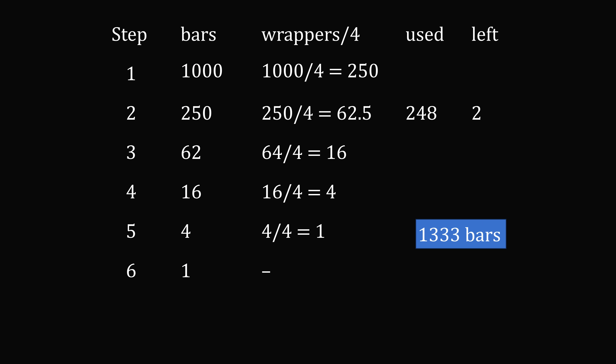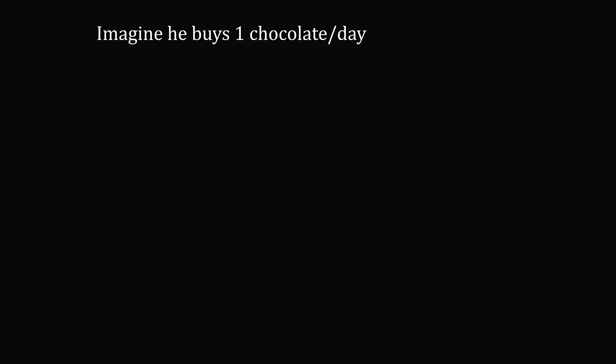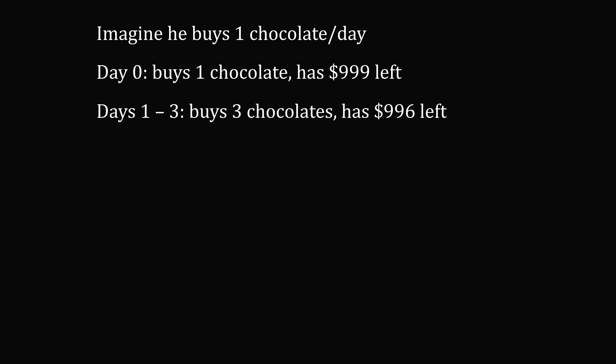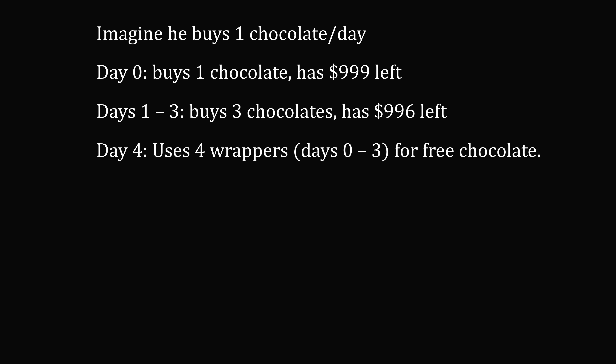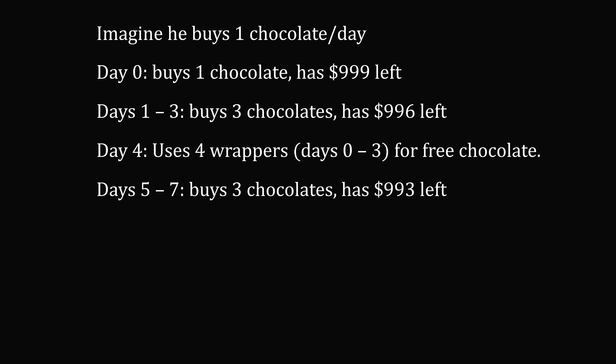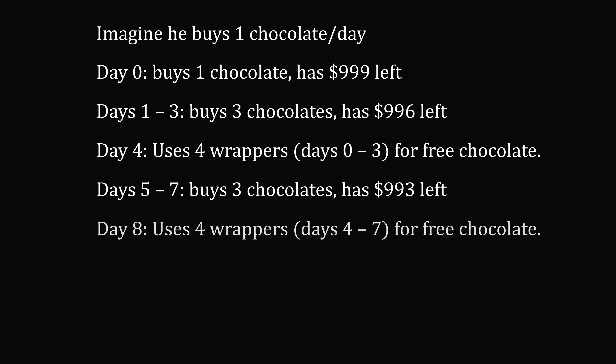Now this is the long way to solve the problem. Here's a clever trick. Imagine Charlie buys 1 chocolate bar per day. On day 0, he buys 1 chocolate and has $999 left. Now think about buying 1 chocolate bar on each of the next 3 days — he'll get 3 chocolates and have $996 left. At this point there are 4 chocolate wrappers, so on day 4 he can use those 4 wrappers to get 1 free chocolate bar. Then we just repeat this: on days 5 through 7 he buys 3 more chocolates and has $993 left. On day 8, he uses the wrapper from the day-4 free bar plus the 3 he bought to get 1 more free chocolate bar. And this pattern continues.